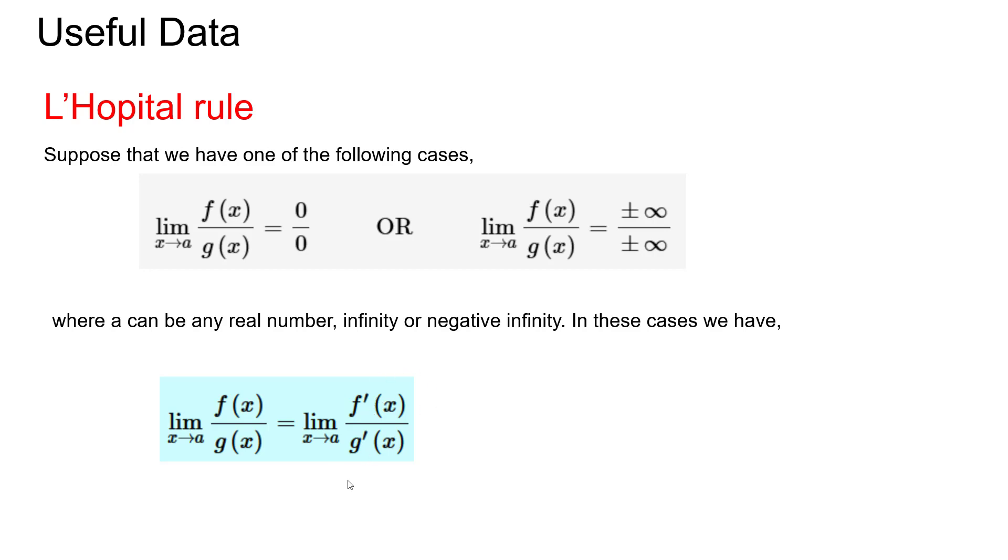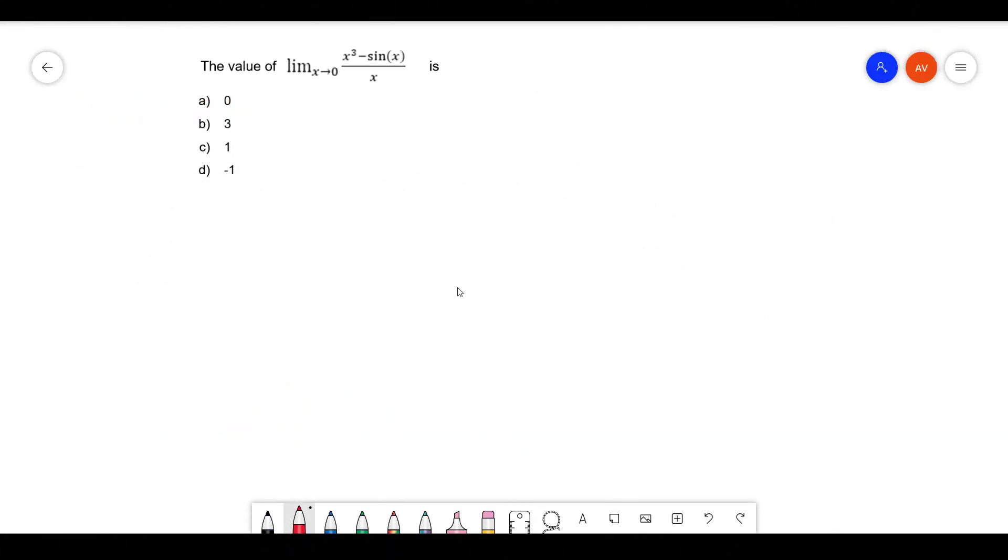Let's see how to utilize this rule. Let's represent this function as f(x) by g(x). So my f(x) is x³ minus sin(x) and my g(x) is x. This is again f(x) by g(x) form.